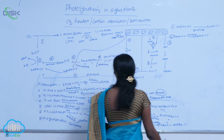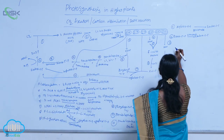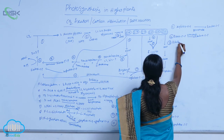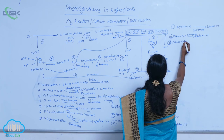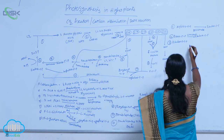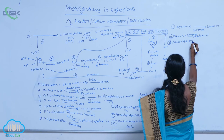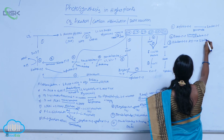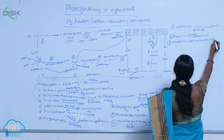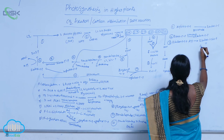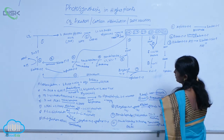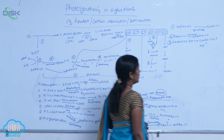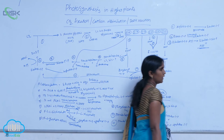The next reaction is the production and regeneration of RuBP. Ribulose 5-phosphate receives one ATP molecule, which is consumed, producing ribulose 1,5-bisphosphate plus ADP. This means RuBP is regenerated here.